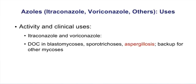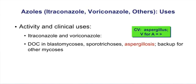For itraconazole and voriconazole, the key focus is voriconazole for Aspergillus — Aspergillus questions are very common on the test. Here's a mnemonic: V for A — voriconazole for Aspergillus — and the equals sign means Aspergillus branches at 45 degrees. So remember: V for A equals 45 degrees.